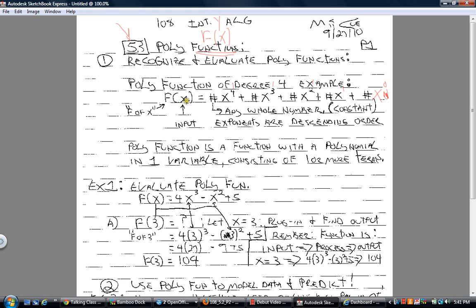The coefficients in front of the variables are whole numbers, and the exponents are in descending order. And f of x allows us to say, if we now have a specific value for x, we could take that value, plug it in to each of the locations where x is, and eventually evaluate it and come up with the output. Input, process, output is what a function is. Polynomial function is a function with a polynomial in one variable consisting of one or more terms.